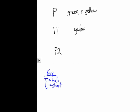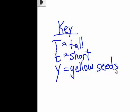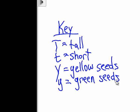We can add that to our key. We'll have big Y equals yellow seeds, and little y equals green seeds. Now that we have our key, let's assign genotypes to our parents.